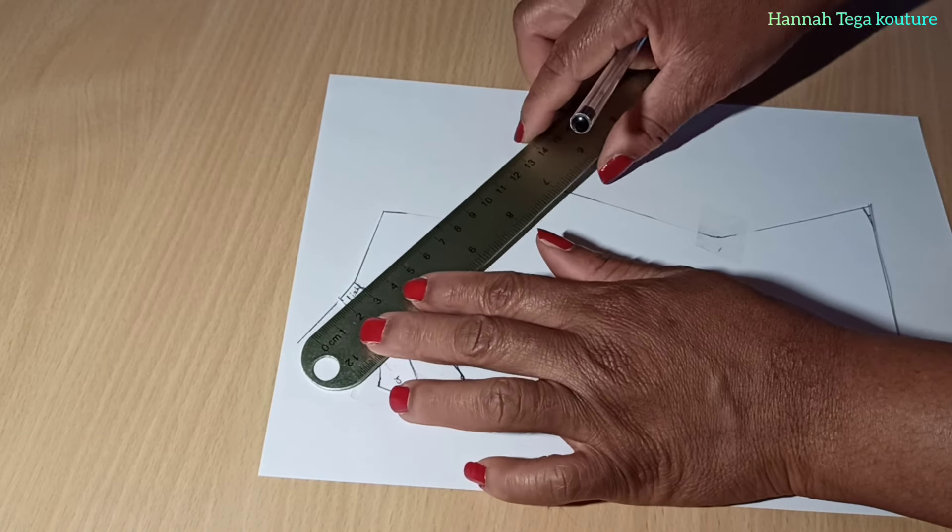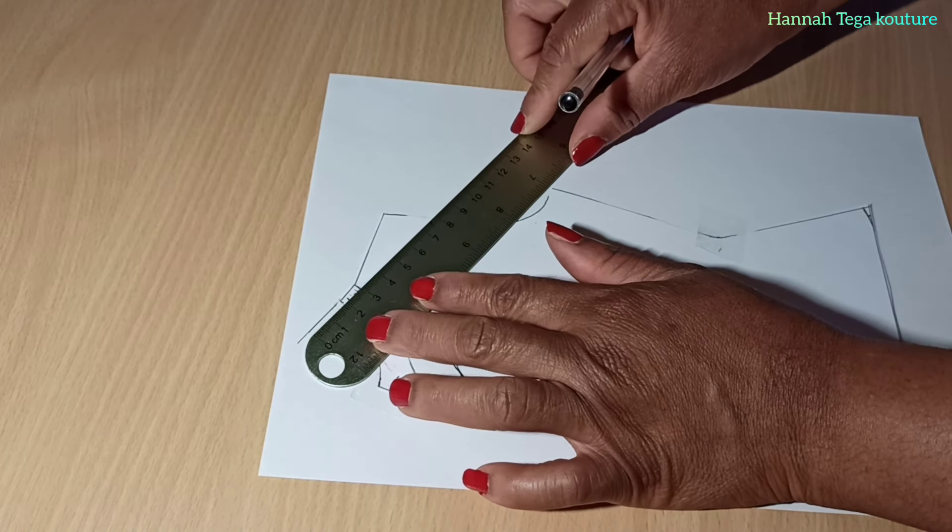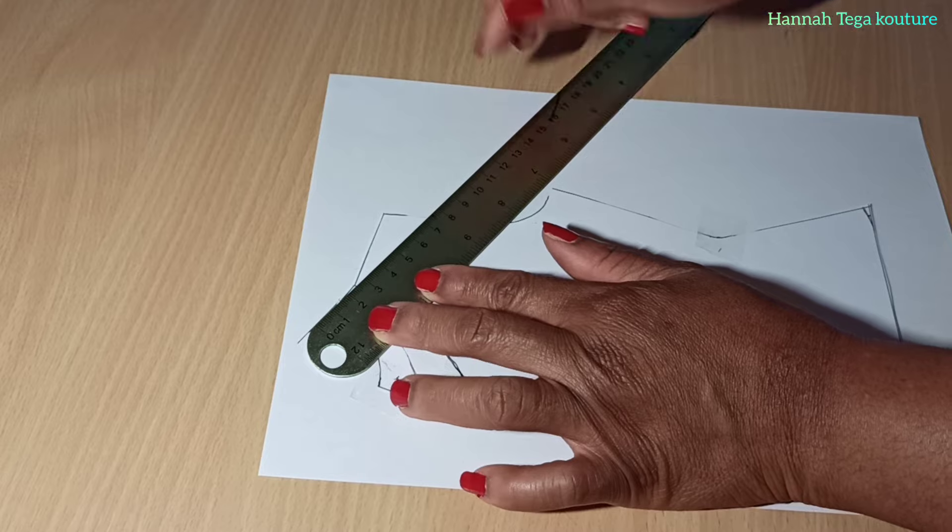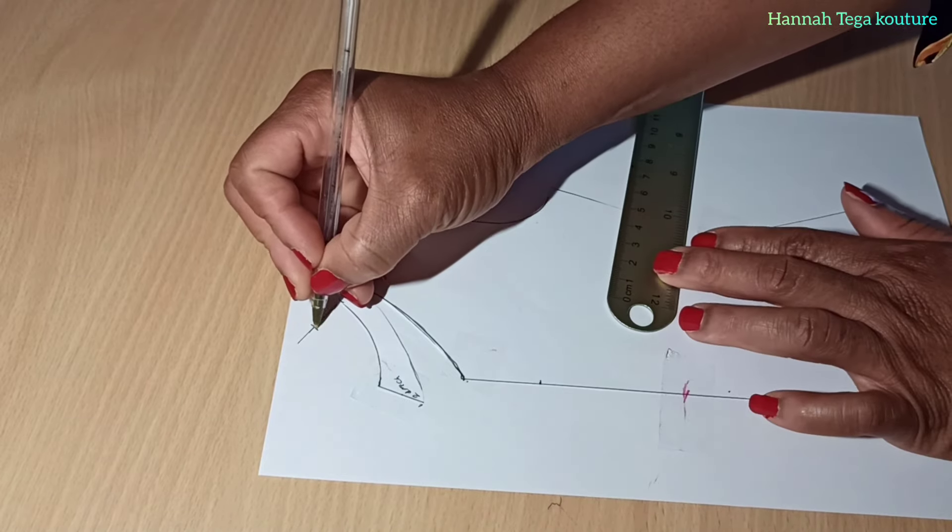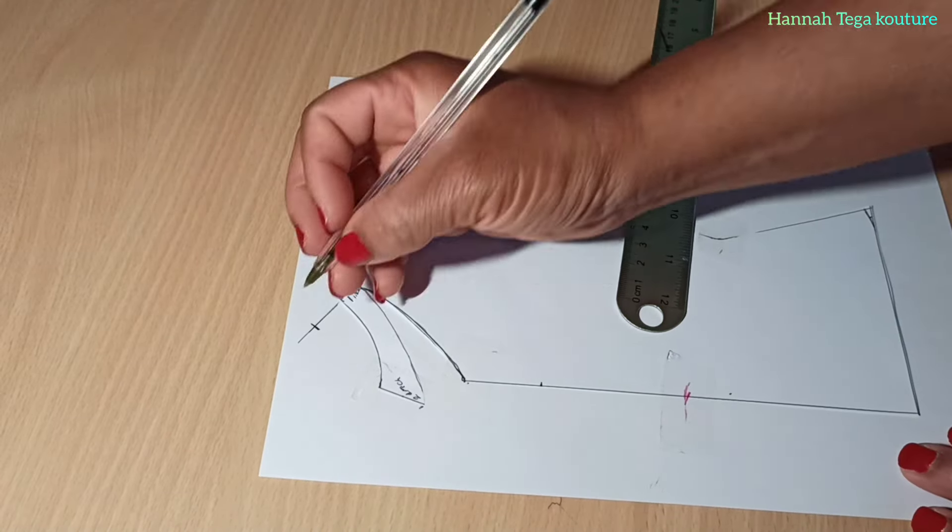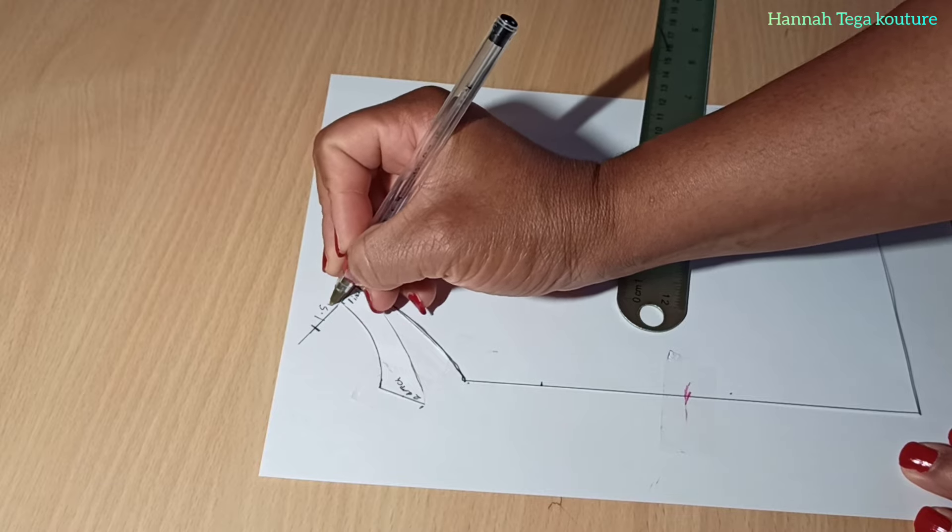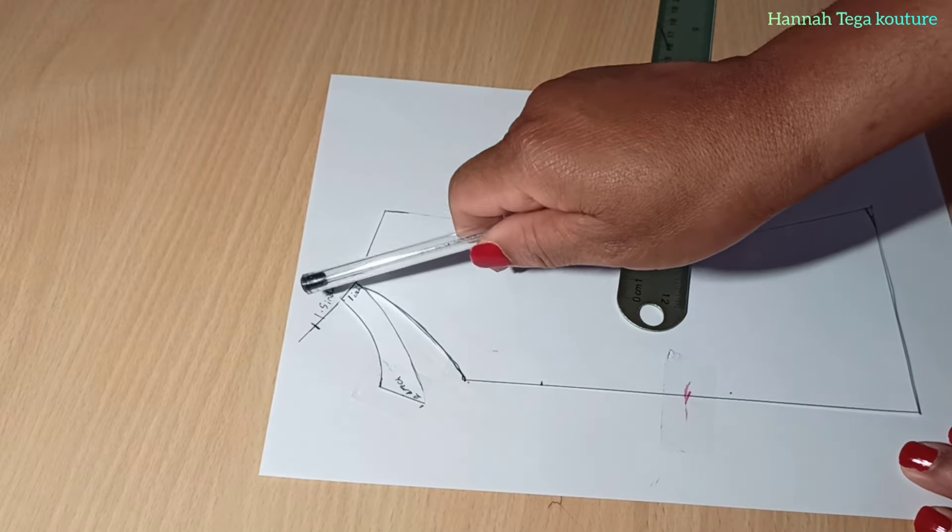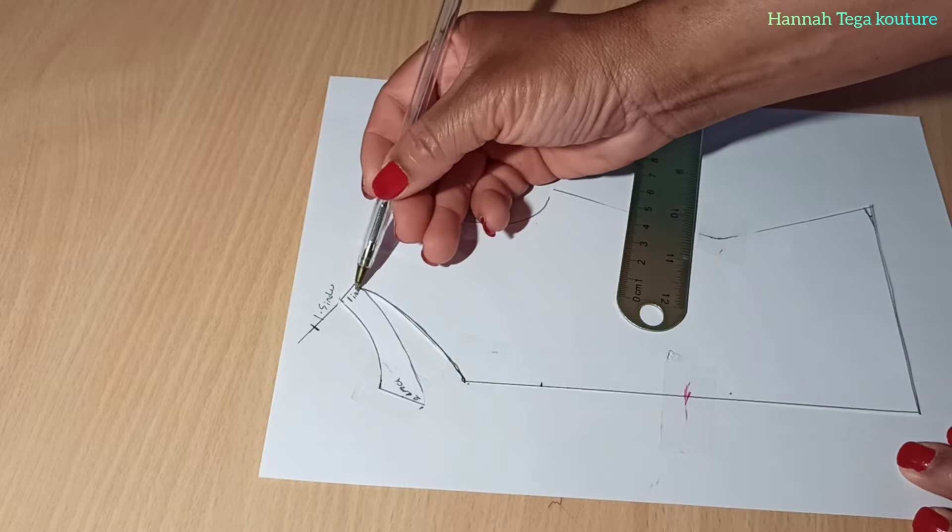Also, it's up to you. You can take two inches if you want your collar to be higher than the 1.5. The 1.5 and the one inch, adding both together, gives us 2.5 for the height of the collar.